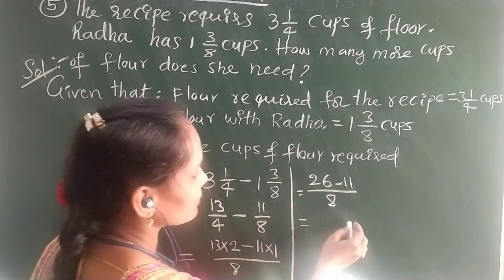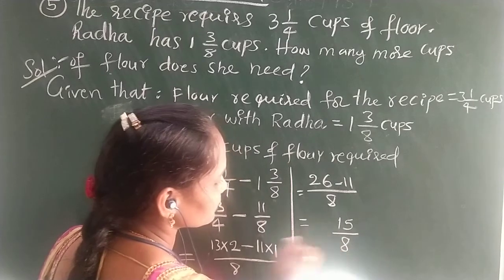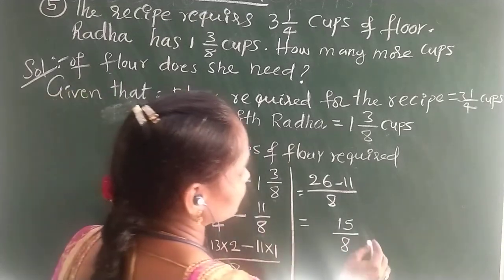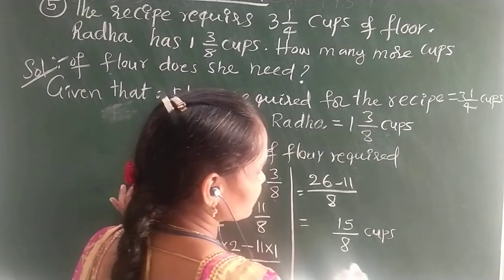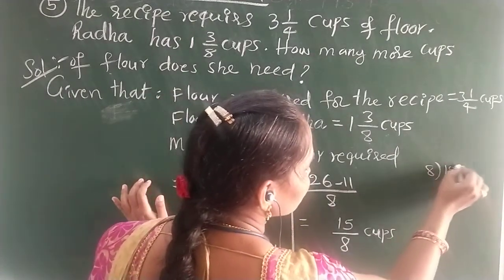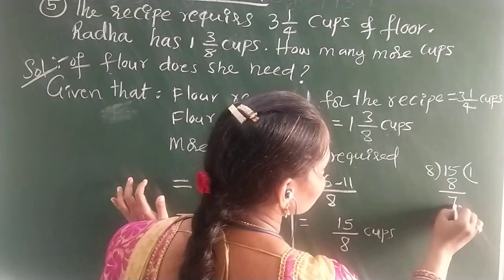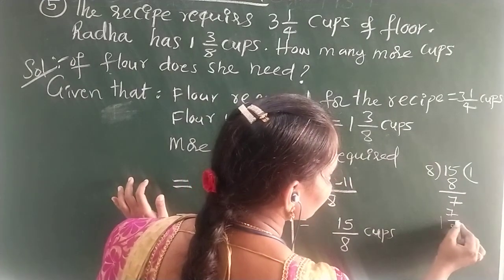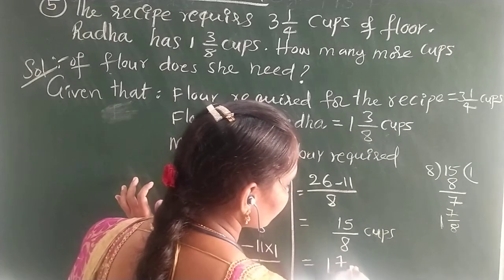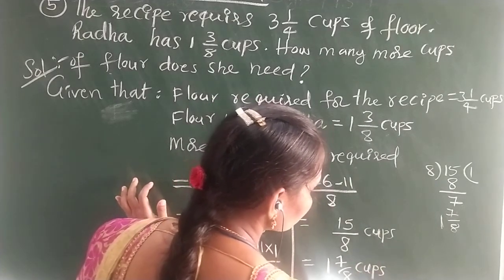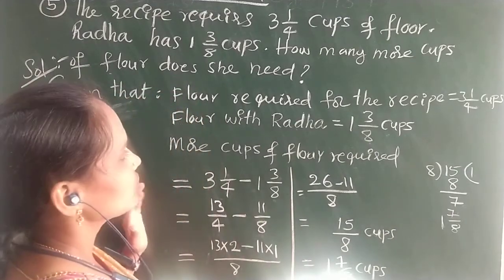Next you have to subtract. 6 minus 1, 5. 2 minus 1, 1/8. These many cups she required, cups of flour she required. Otherwise you can write in mixed fraction also. How we can write? You have to divide, 8 ones are 8, remainder is 7. You can write 1 7/8 mixed fraction. How many more number of cups she needed? 1 7/8 cups she want to require. She requires 1 7/8 cups. This is the solution. I hope you understood all of you.